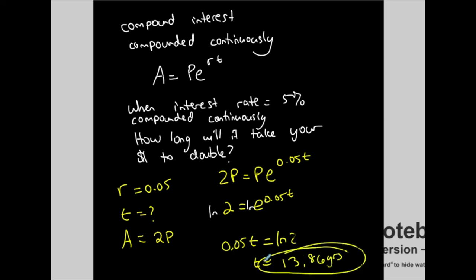That's a pretty reasonable result — and you can't even find 5% interest rates anymore. This compound interest problem is another example of an exponential growth function. I just wanted to add it to the list of applications alongside the half-life decay examples we covered.